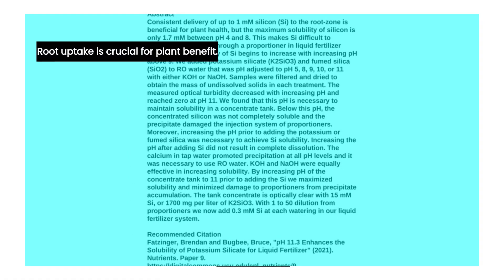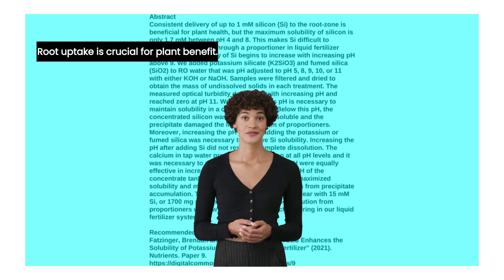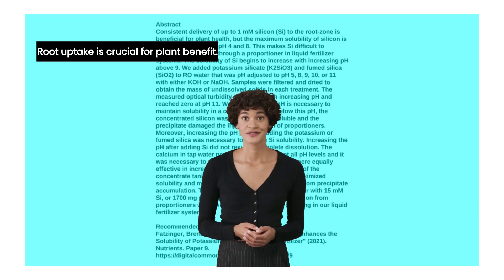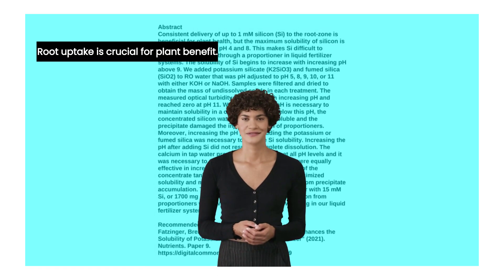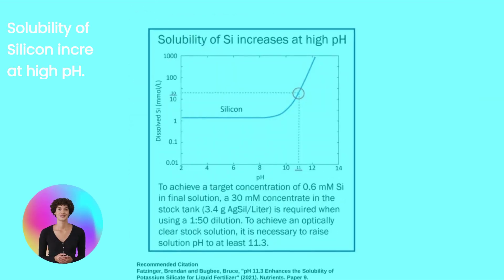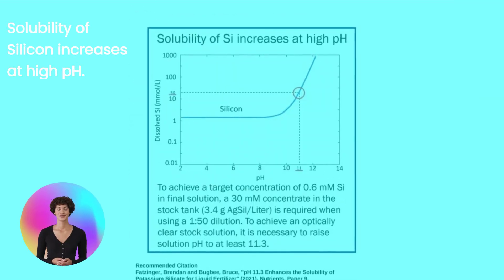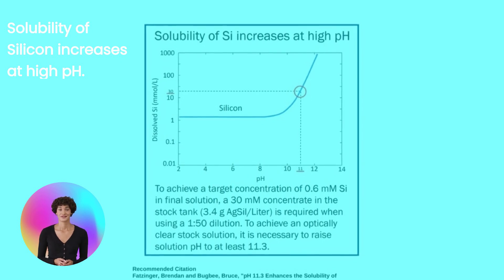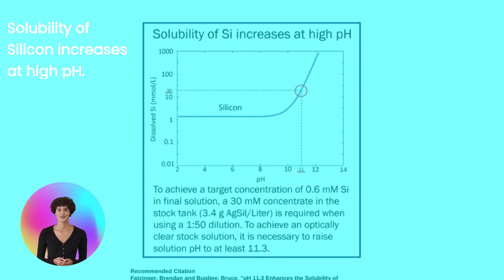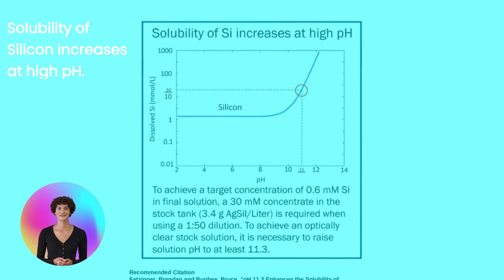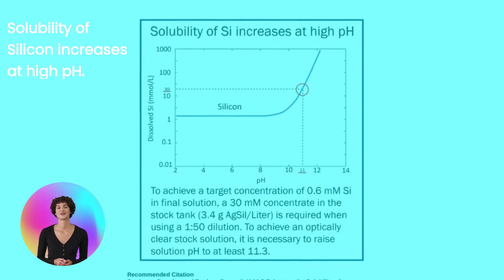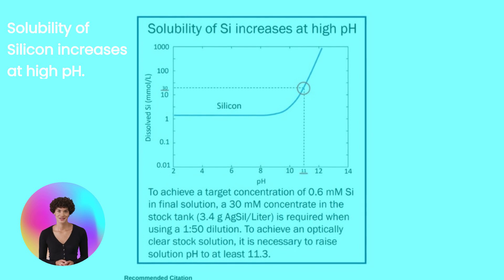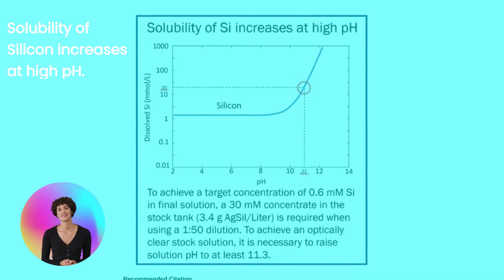Maintaining constant plant-available silicon at low concentrations is crucial for root uptake and plant benefit. However, the maximum solubility of silicon is only 1.7 millimole between pH 4 and 8, making silicon difficult to concentrate and add through a proportioner in liquid fertilizer systems.